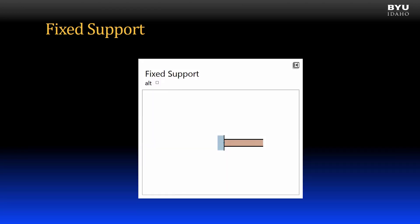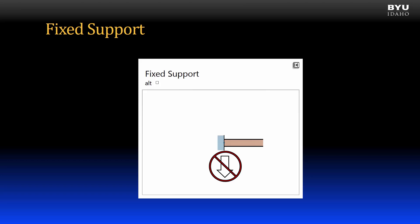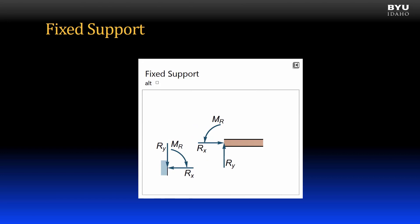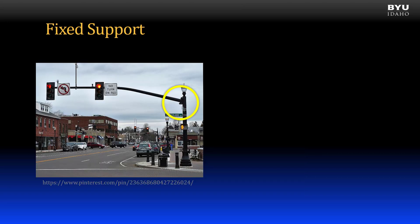Another common support is a fixed support. Like the pin support, a fixed support prevents the ends of the body from translating horizontally and vertically. However, a fixed support also prevents the ends of the body from rotating. So this is the first support we have considered that forms a moment support reaction. We model the support as a horizontal reaction force, a vertical reaction force, and a couple moment. The connection between the arm and the post of a traffic light is a fixed support — it keeps the arm from moving vertically and horizontally, and also keeps it from rotating under the applied loads.